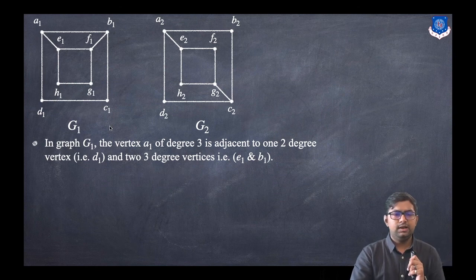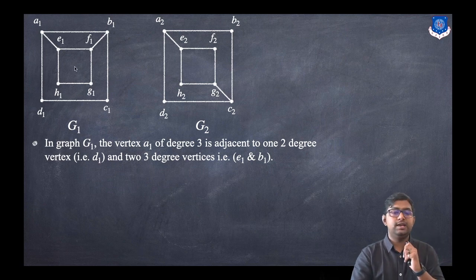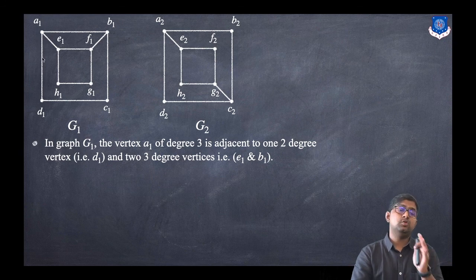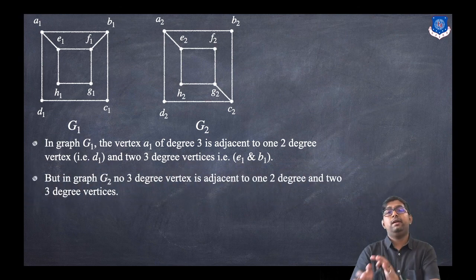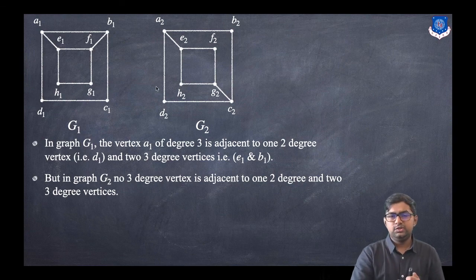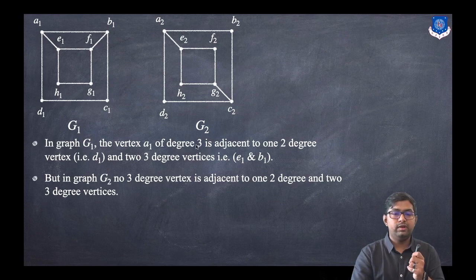Let us examine adjacency. In graph G1, consider vertex a1, which is degree three. It is adjacent to d1, e1, and b1 — that is, one degree-two vertex (d1) and two degree-three vertices (e1 and b1). So in G1 every degree-three vertex is adjacent to one degree-two vertex and two degree-three vertices. This same scenario must appear in G2, but it does not.